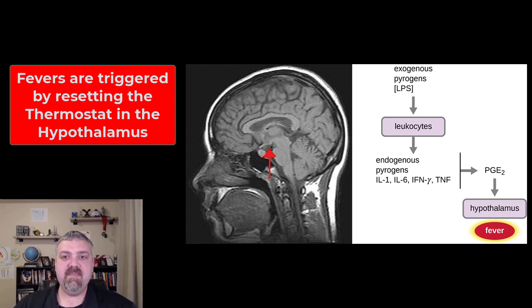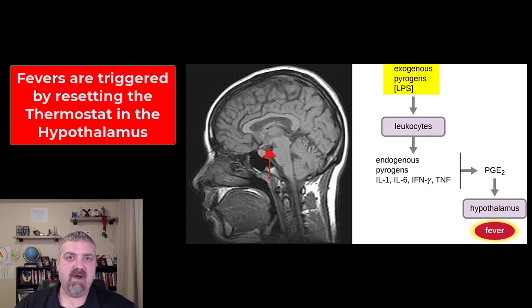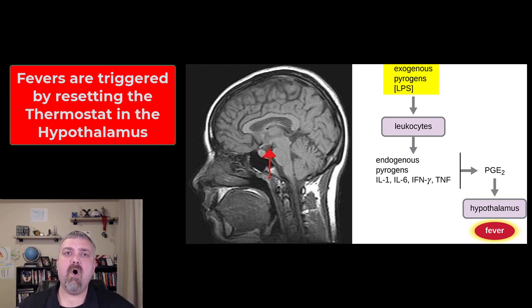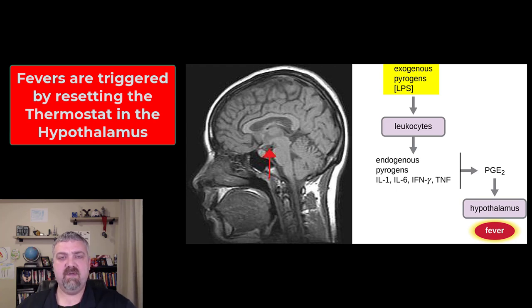They can be exogenous, meaning coming from outside the body, or endogenous. A pyrogen is any chemical that increases the core temperature. So the exogenous pyrogen here is LPS — lipopolysaccharide. That's going to be the lipid A toxin found in the outer membrane of all gram-negative bacteria. So as your body is destroying gram-negative bacteria, or as they're reproducing, they're going to be releasing this toxin into the environment — that's going to be an exogenous pyrogen.